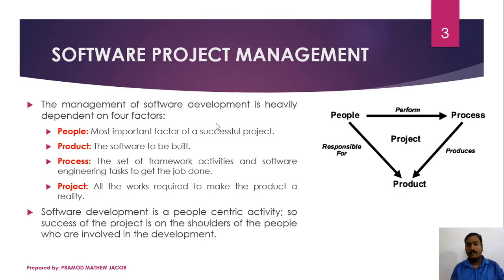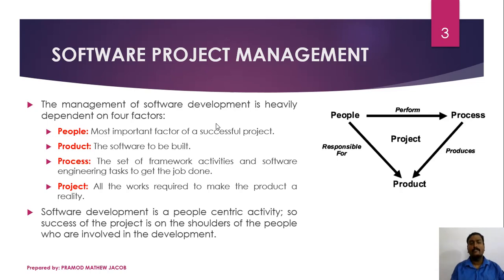Software development is a people-centric activity; the success of the project rests on the shoulders of the people involved in the development. The second factor is the Product, which is ultimately the software to be built. Process is the set of framework activities and software engineering tasks to produce the product. Project is all the work required to make the product a reality.